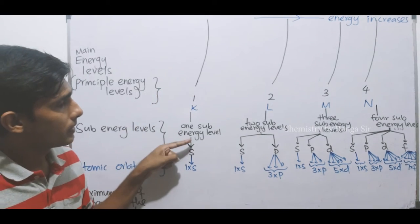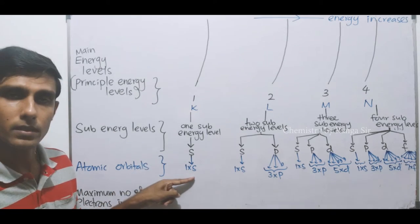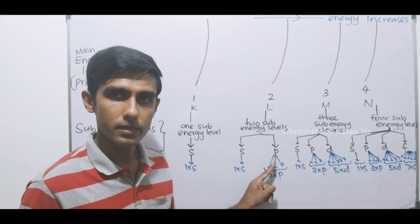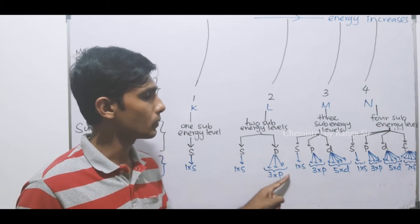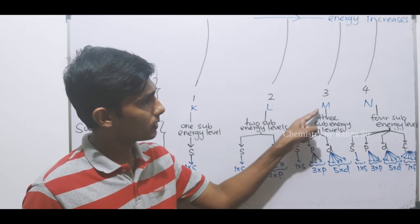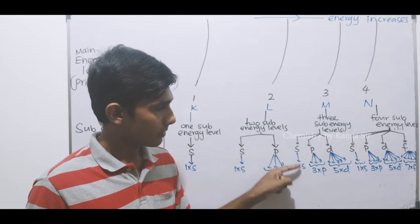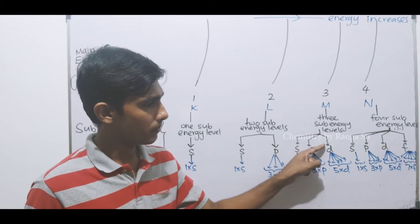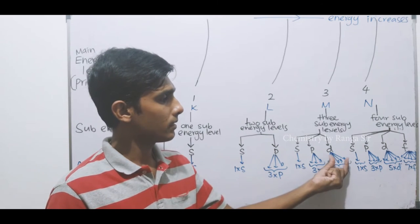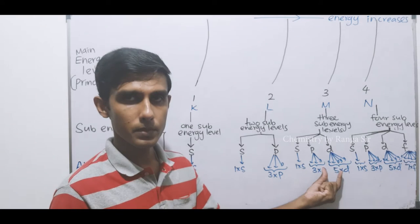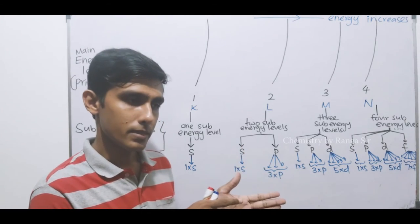The first main energy level has one sub energy level called the s sub energy level, because it contains one s orbital. The second main energy level has two sub levels: s and p. The s sub energy level has one s orbital, and the p sub energy level has three p orbitals. The third main energy level has three sub energy levels. This is the outcome of hard work by different scientists with the help of the Schrödinger wave equation.